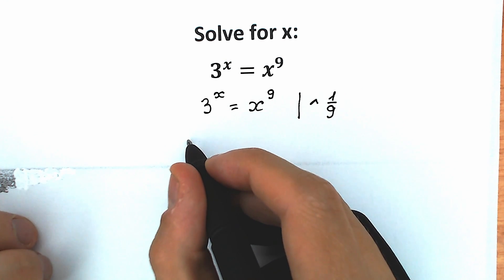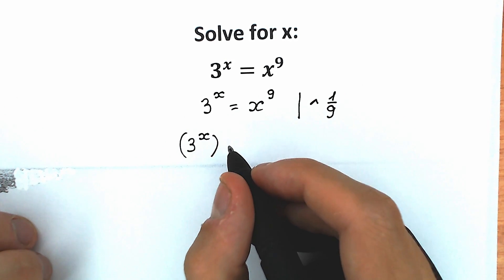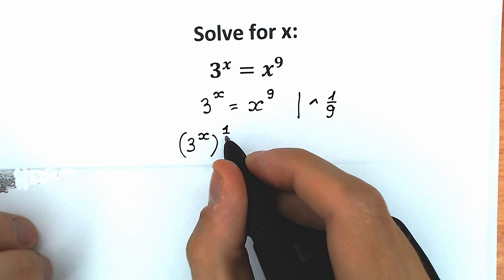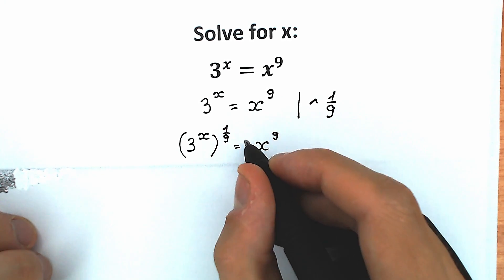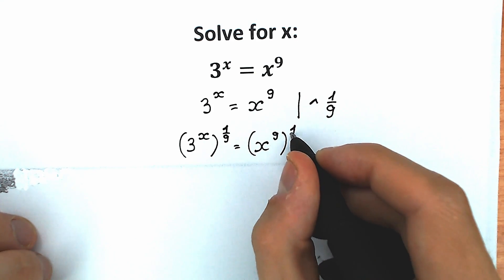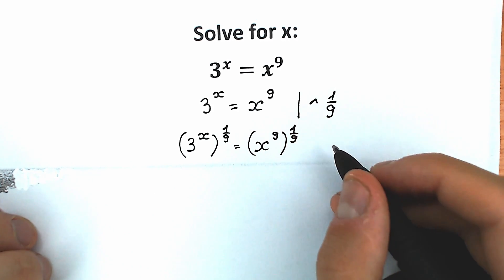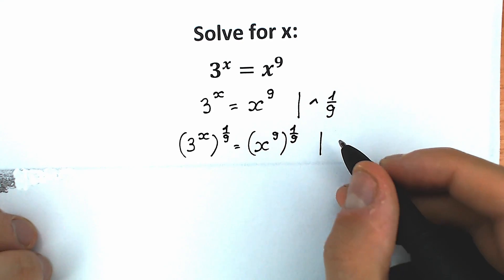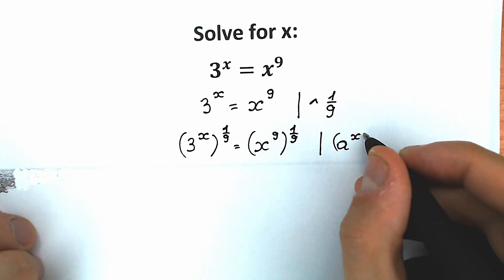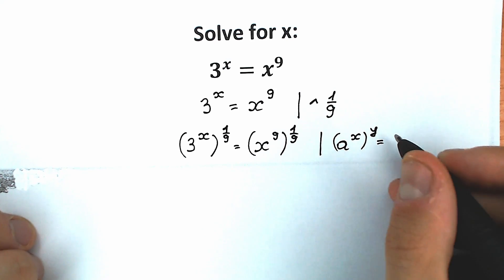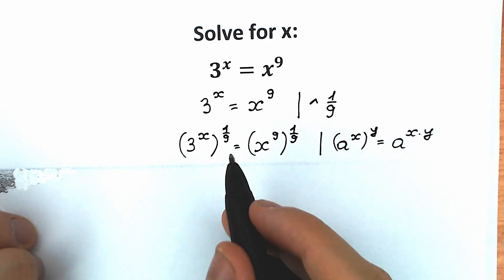So as a result, what do we have right here? 3 to the power x, we're going to raise to the power 1 over 9, and equal to x to the power 9, we're going to raise to the power 1 over 9. Right now we need to know a really great property — the well-known power rule. If we have a to the power x raised to the power y, as a result we have a to the power x times y. Let's apply this rule in both of these cases.